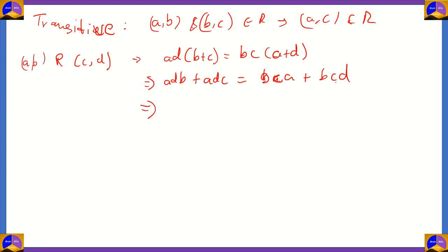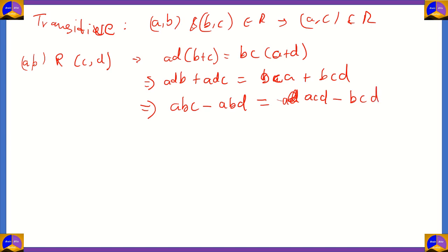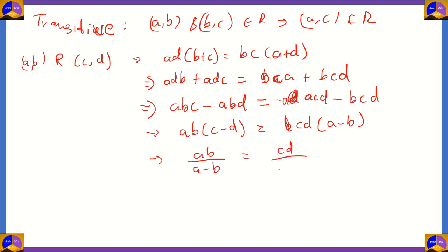Rearranging the terms, we take those with ab common: on one side abc minus abd, and on the other acd minus bcd. Factoring out ab on the left gives ab(c−d), and factoring cd on the right gives cd(a−b). Therefore, ab/(a−b) equals cd/(c−d).